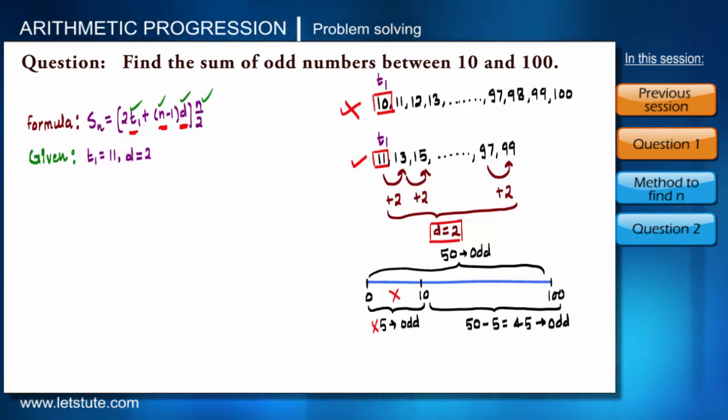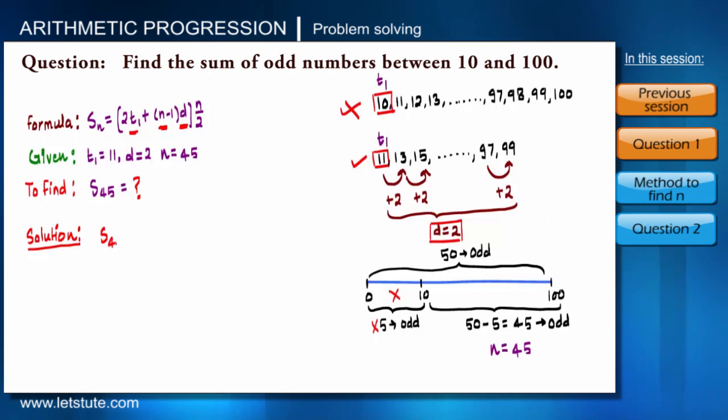So we got our third required parameter n, that is equal to 45. So now we have got all the parameters. Substitute these parameters in the formula: S45 equals 2 into 11 plus n minus 1, that is 45 minus 1, into 2, whole multiplied by 45 upon 2.